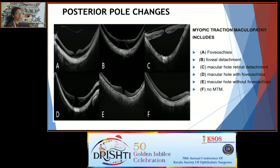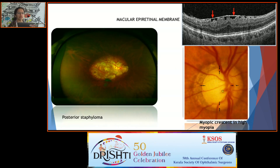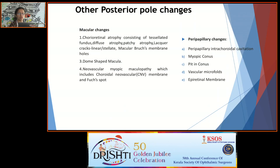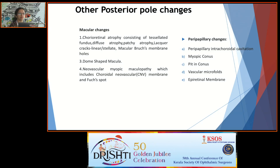Posterior pole changes include myopic traction maculopathy, which includes foveoschisis, foveal detachment, macular hole, macular hole with foveoschisis, myopic macular epiretinal membrane, and posterior staphyloma. Other posterior pole changes include macular changes like chorioretinal atrophy, tessellated fundus, lacquer cracks, Bruch's membrane dome-shaped macula, neovascular myopic maculopathy, choroidal neovascular membrane, peripapillary intrachoroidal cavitation, myopic conus, and epiretinal membrane with macular microfolds.